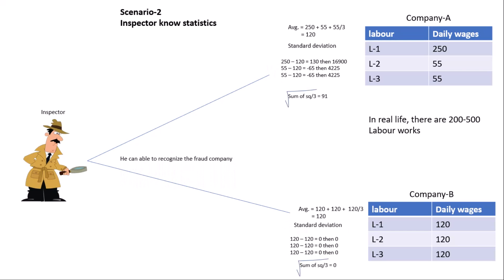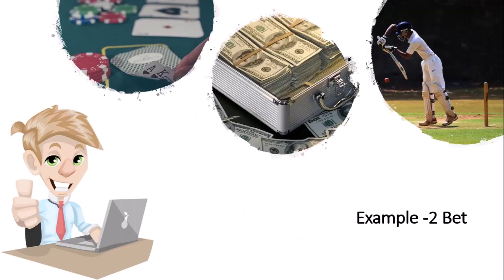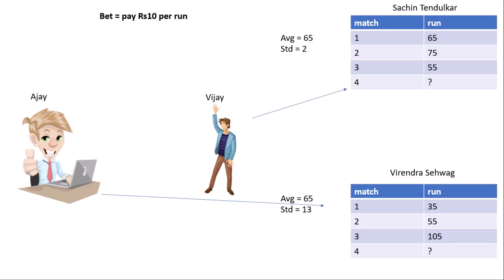This is another example: bet. Everybody knows what is bet. So this is Ajay, and he is interested to bet on cricket. This is a very low-risk bet in which the person has to give 10 rupees per run.